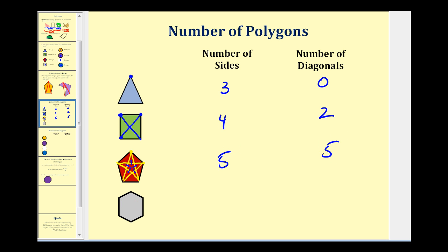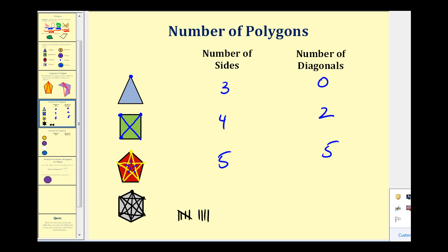For the hexagon, starting at one vertex we have three diagonals. Moving to the next vertex, another three — giving six so far. From the next vertex only two new diagonals can be sketched, giving eight. The following vertex already has two sketched, so one more is added. The remaining vertices already have all three diagonals sketched. So when we have six sides there are nine diagonals.